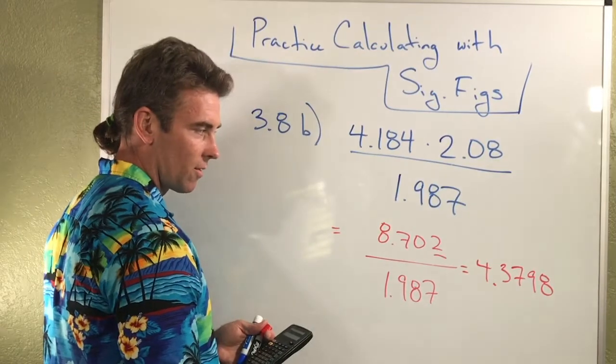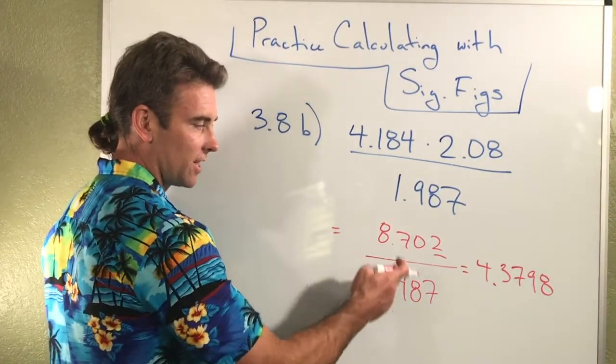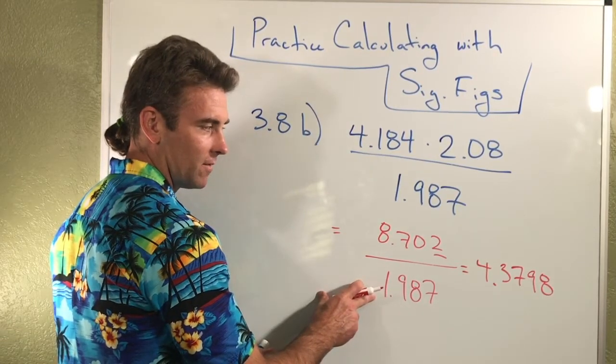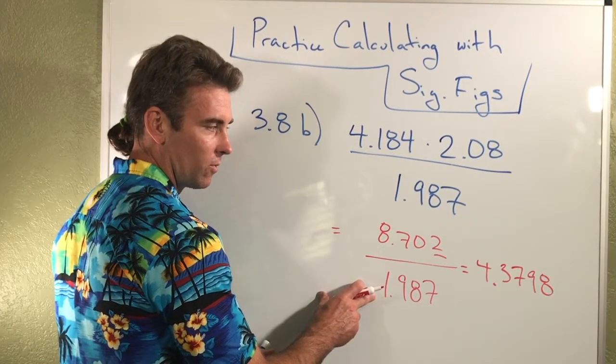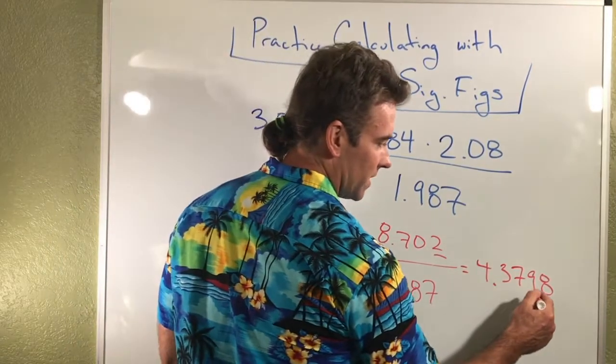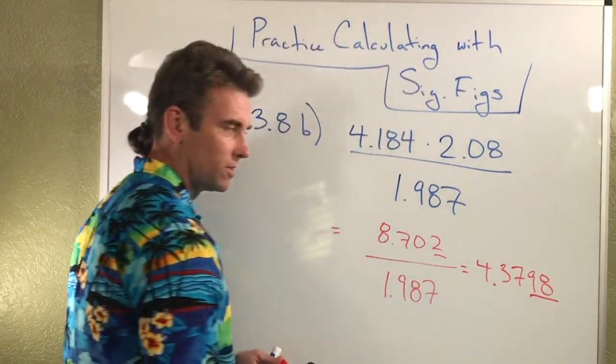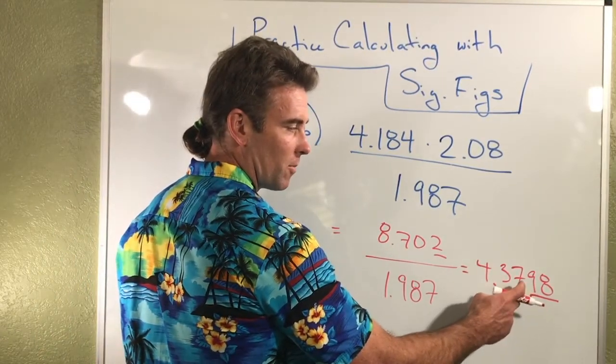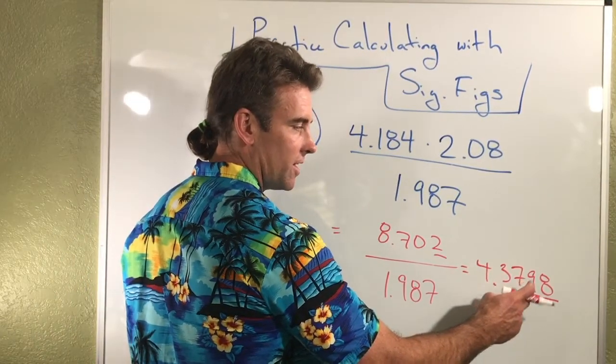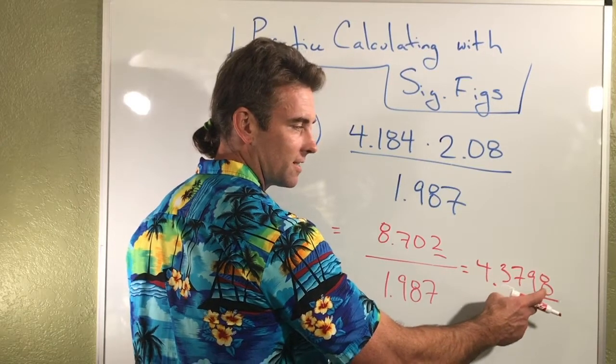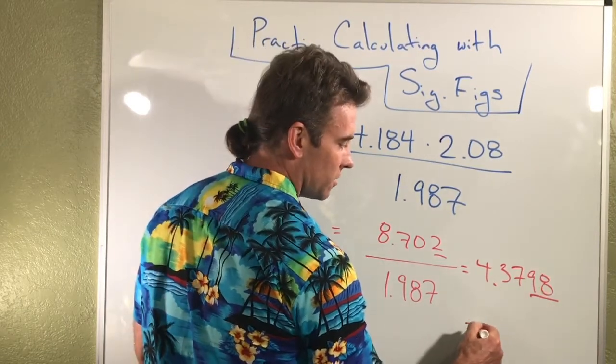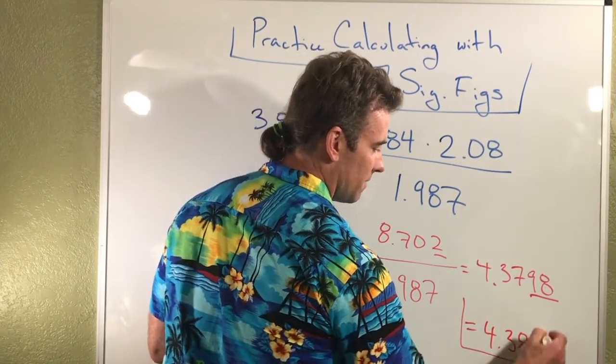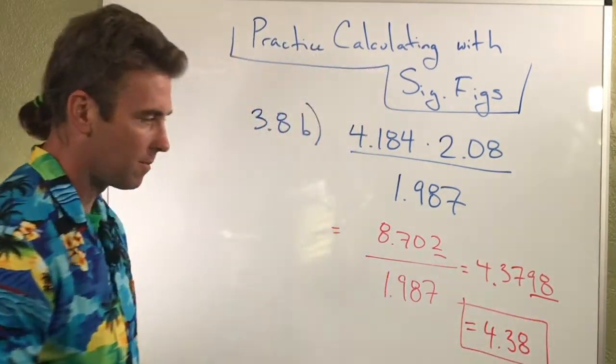The number that my calculator popped out at me is 4.3798, and so on. I look at this and I say, okay, I've got three significant figures divided by four significant figures, so I'm only allowed to include three. So what I do is I underline those two that I wrote down. And now I'm going to round. Now that I'm ready to report my value, I'm going to round this one up because this is greater than five. So my properly reported calculation is going to be 4.38 for that particular one.